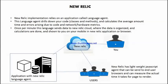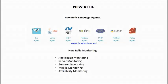New Relic also has a lightweight JavaScript agent that can be sent to end users and their browsers. It can measure the actual time it takes for a page to render, so you can say it can monitor front-end performance constantly.